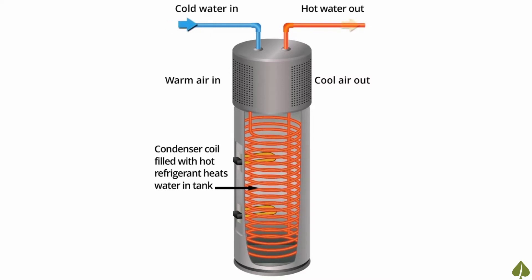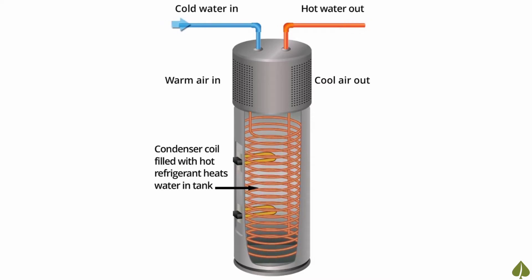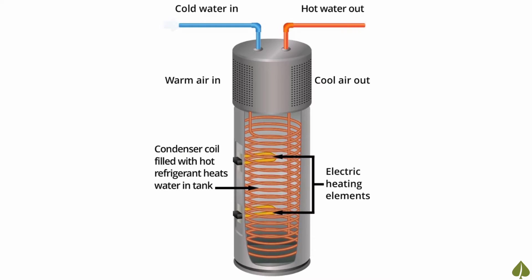When a demand for hot water occurs, like washing hands in a sink, the heat pump water heater relies solely on the heat pump to maintain the water temperature in the tank, thus saving energy by not using electric resistance heating. When a higher demand for hot water occurs, like a long shower, some heat pump water heaters temporarily switch to use electric resistance heating to heat the cold water entering the storage tank, and then switch back to using the heat pump to maintain the water temperature set point.